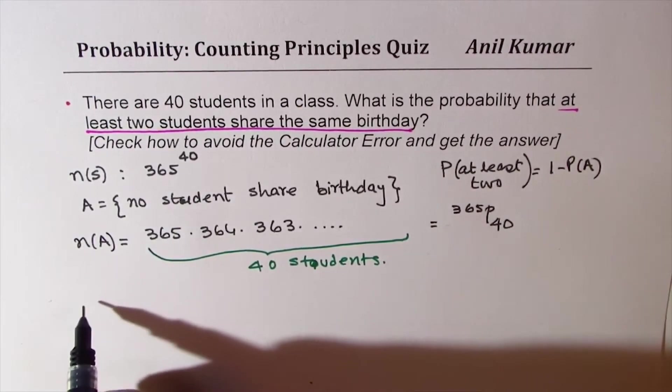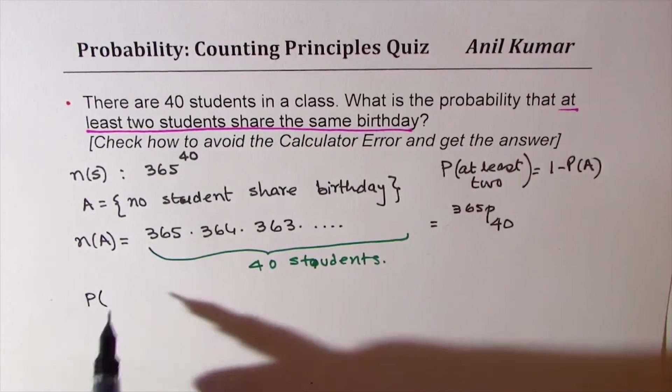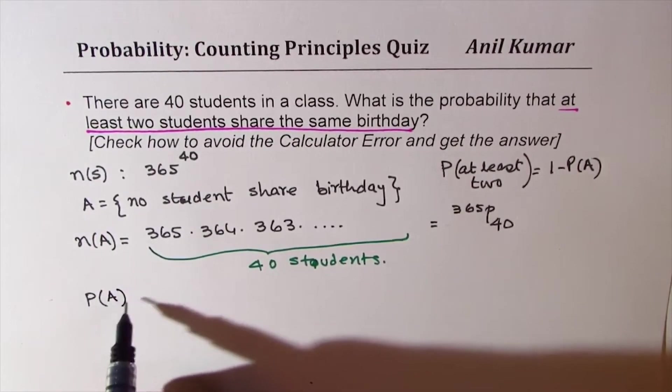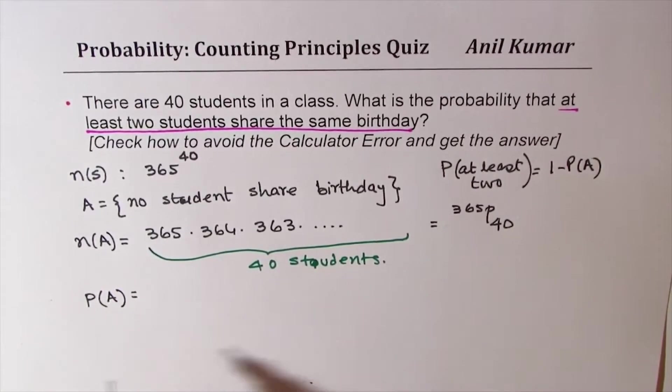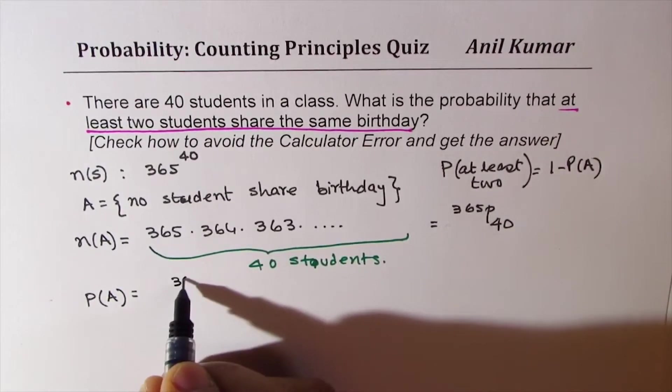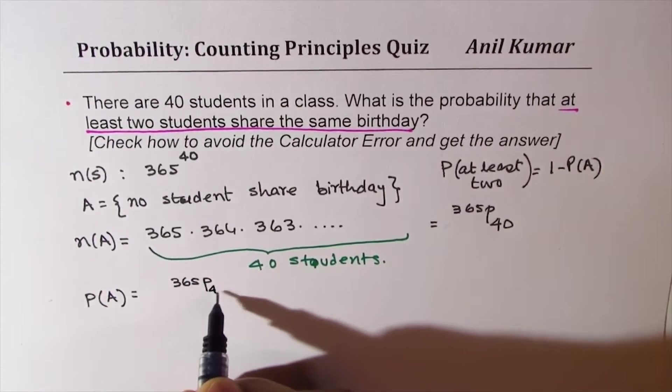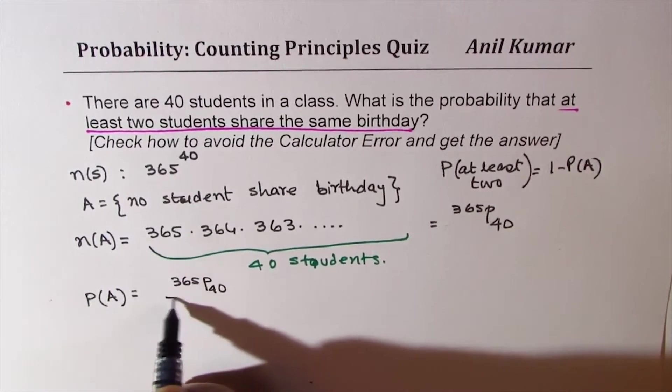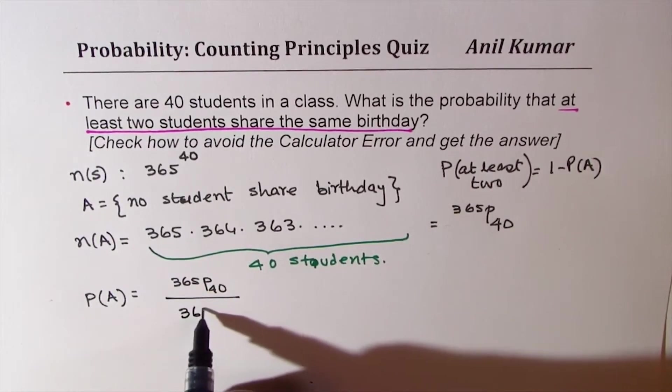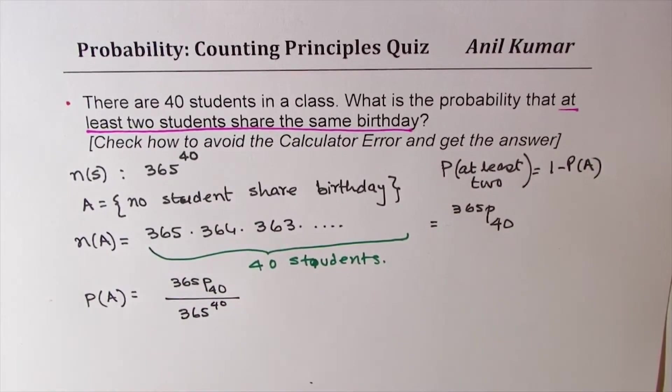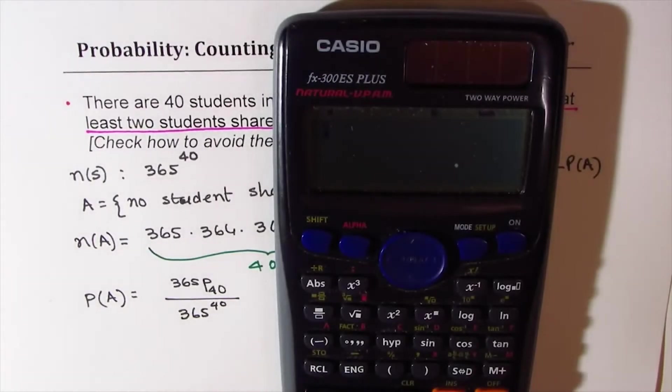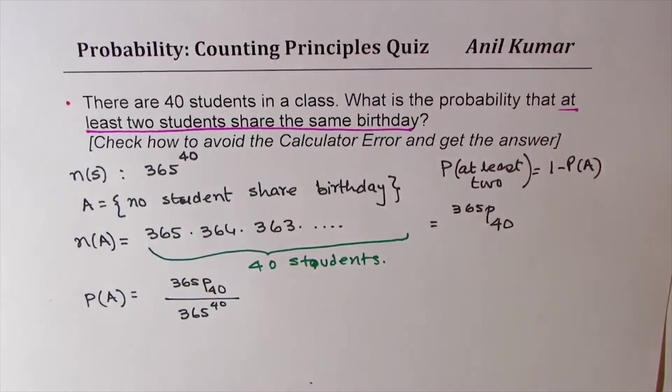And therefore, the probability for A, which is unique birthdays, will be 365P40, which is N of A divided by N of S, which is 365 to the power of 40. Now, the problem here is that as soon as I do 365 to the power of 40 and calculate, I get math error. So I cannot really calculate this answer. So that's a huge problem. How do I do that?